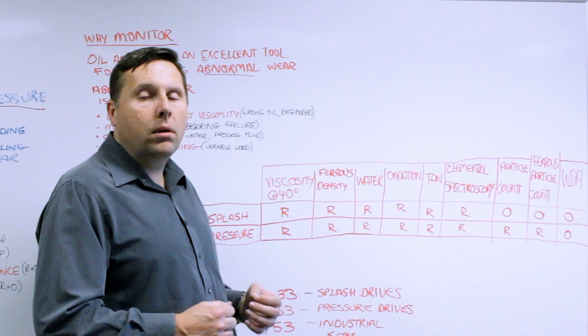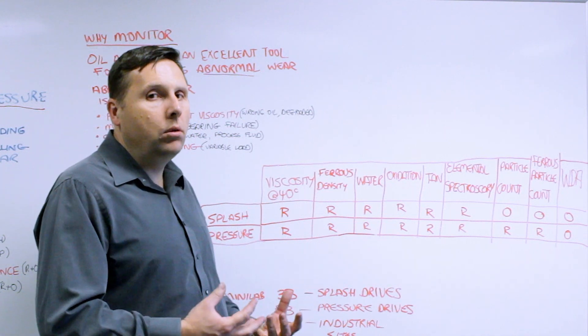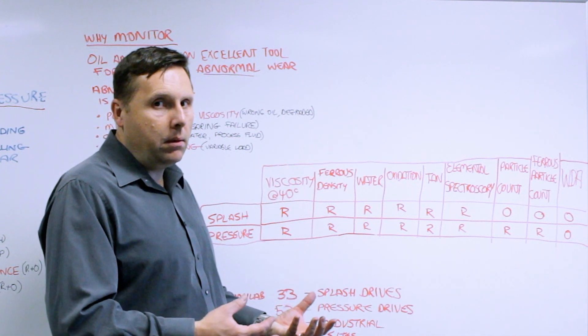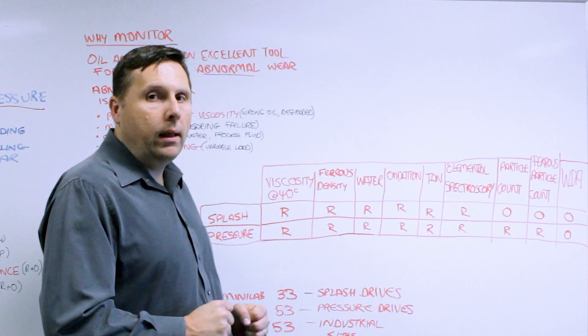Oxidation and acid number is critical to determine if the lubrication oil is degraded beyond its normal useful life.